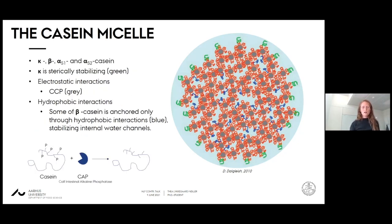The casein micelle is a proteinaceous colloidal structure in milk, composed of casein proteins: kappa, beta, alpha-s1, and alpha-s2. Kappa casein is on the outside, shown in green in the figure, and it is sterically stabilizing the casein micelle, preventing it from growing indefinitely and aggregating with adjacent micelles. It's held together by different interactions, electrostatic and hydrophobic.